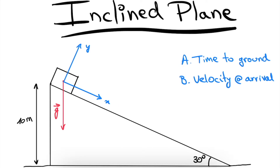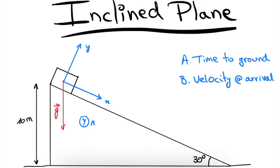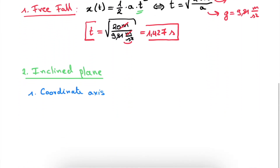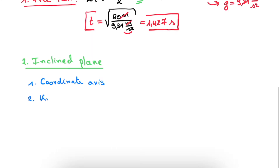This means we have reduced our two-dimensional kinematics problem to a one-dimensional kinematics problem, making it much easier to solve. To make this even more clear: if we had chosen the standard horizontal/vertical axes, both the x and y coordinates would change as the object slides down, making it a two-dimensional problem. By choosing our axis parallel to the plane, we reduce to one-dimensional motion. We can therefore use the same one-dimensional kinematics formula used for the free-fall case.